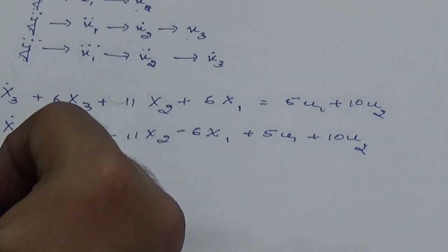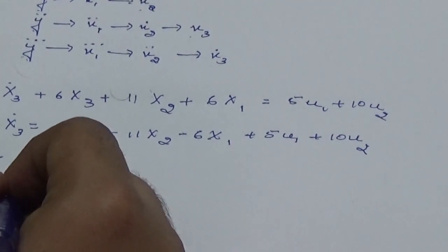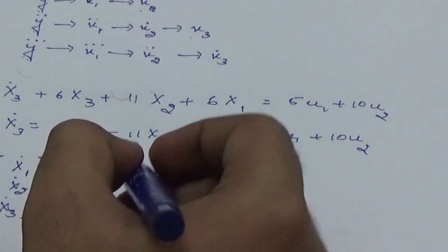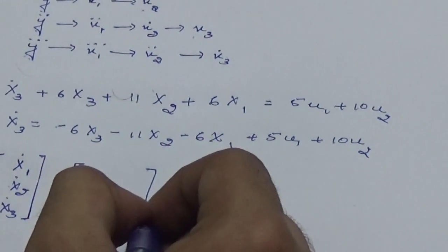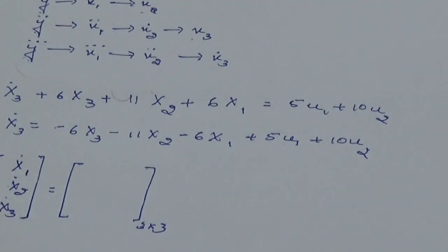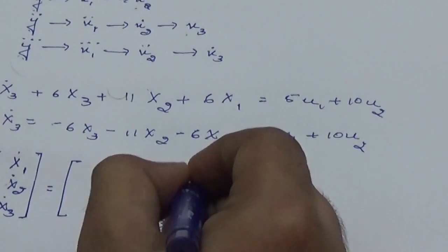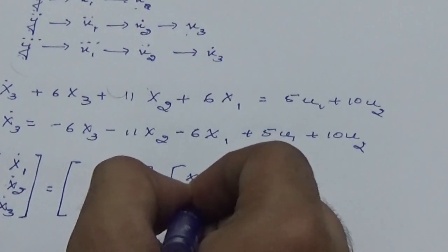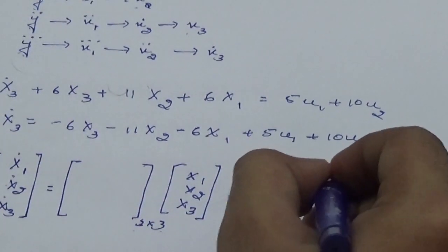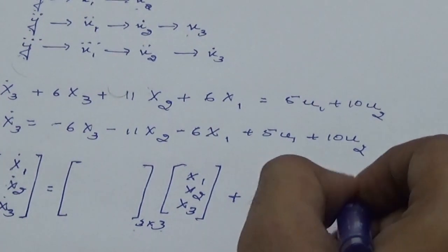Once this is done, I would be taking the state model expression. I know that the standard form of the state model expression is [x₁ dot, x₂ dot, x₃ dot]ᵀ. This is equated to a matrix which is 3×3. How do I know it is 3×3? Because I have obtained up to x₃, so that means there are three state variables. Hence the matrix is 3×3, which is multiplied by [x₁, x₂, x₃]ᵀ plus another matrix which is multiplied by the inputs u₁ and u₂.